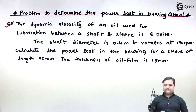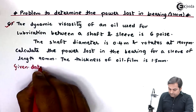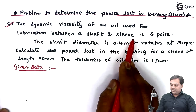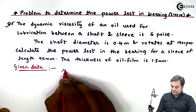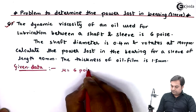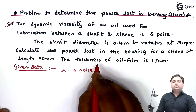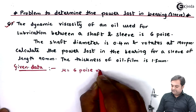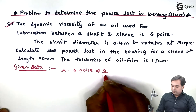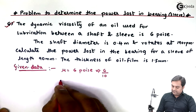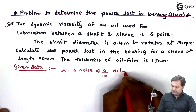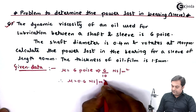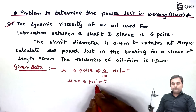Let us start with this problem. The dynamic viscosity of an oil used for lubrication between a shaft and sleeve is six poise, so mu is given in terms of poise. I have to convert it into Newton second per meter square, so I divide it by 10. This gives mu as 0.6 Newton second per meter square.